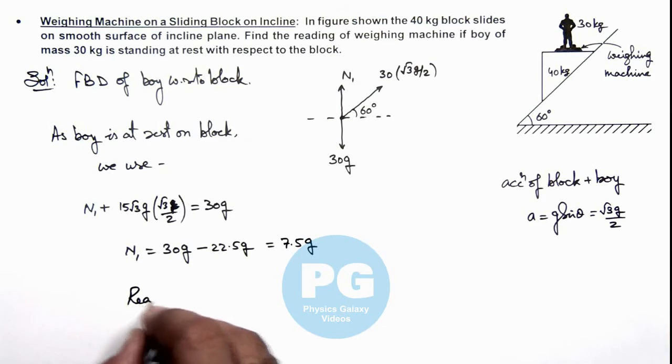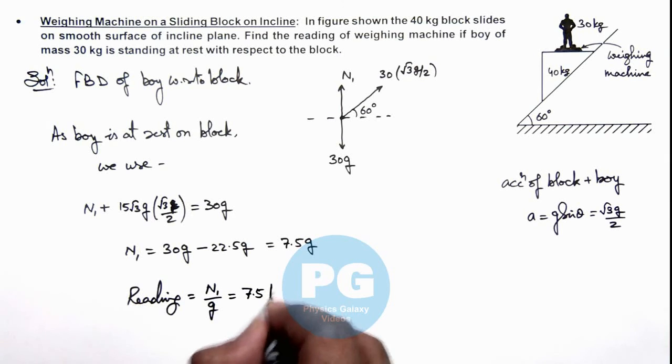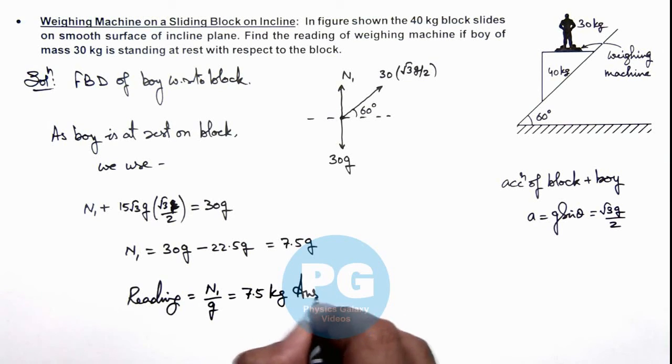So if we calculate the reading of weighing machine, the reading can be given as N₁ in kilogram weight, that is N₁/g, so this will be 7.5 kilograms. That will be the final result of this problem.